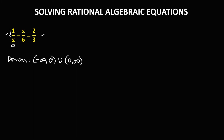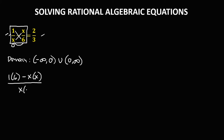To solve this equation, we need to simplify it first. Using cross multiplication, we have 1 times 6, minus x times x, over x times 6, equals 2 over 3.